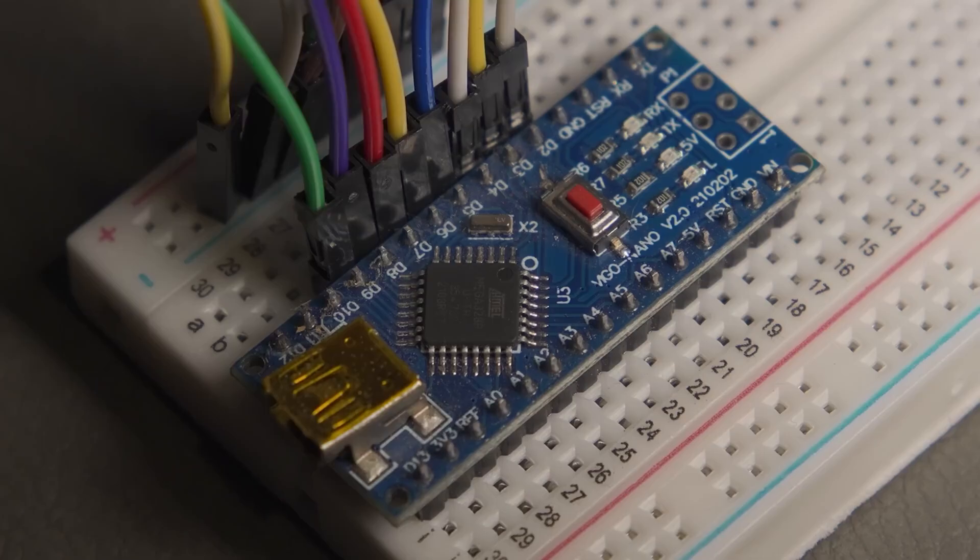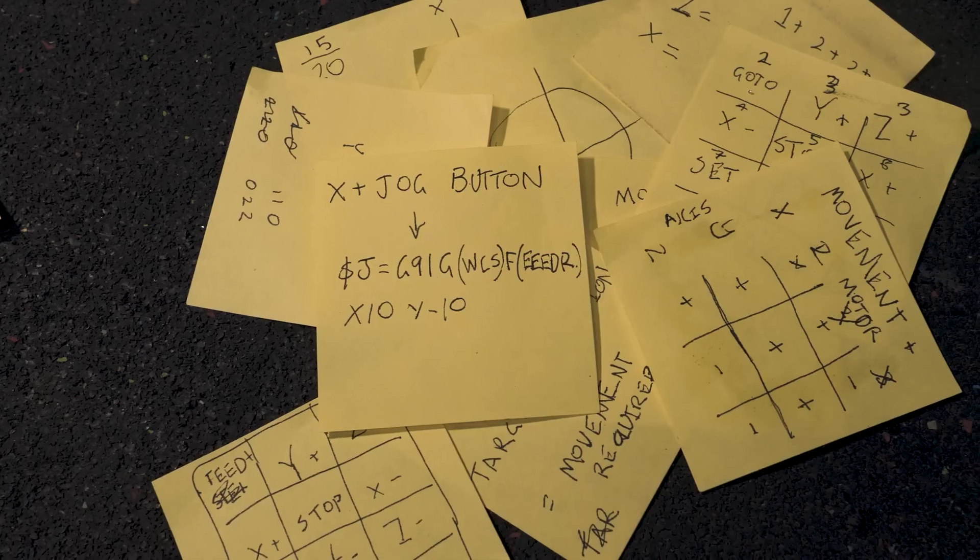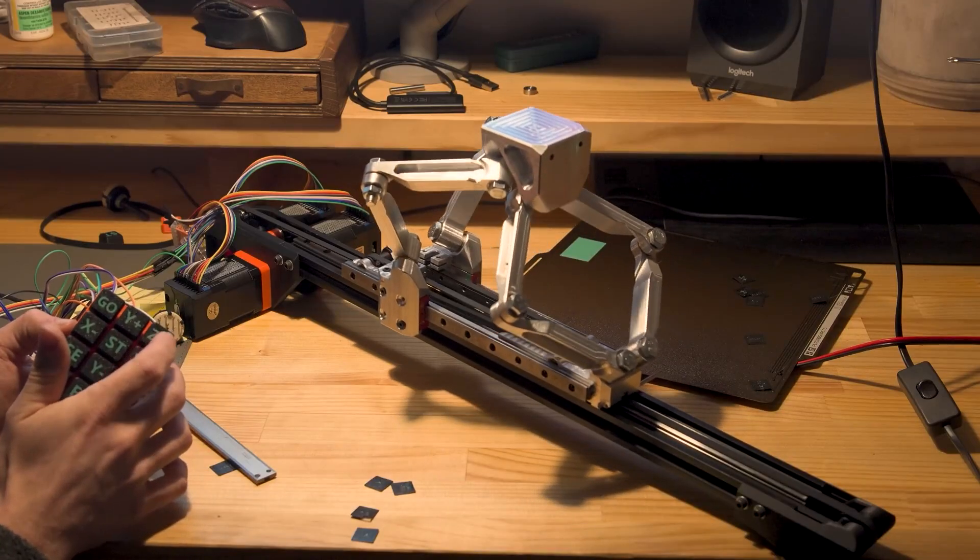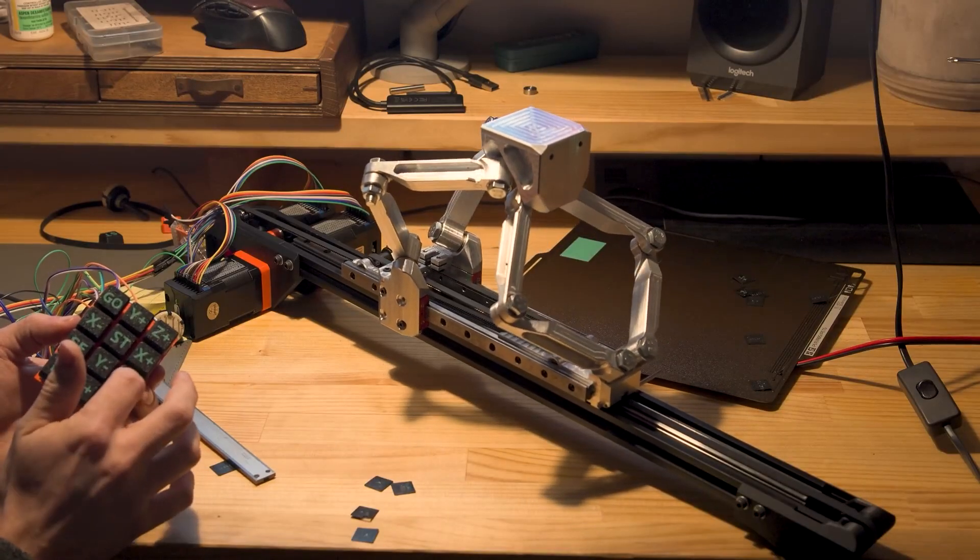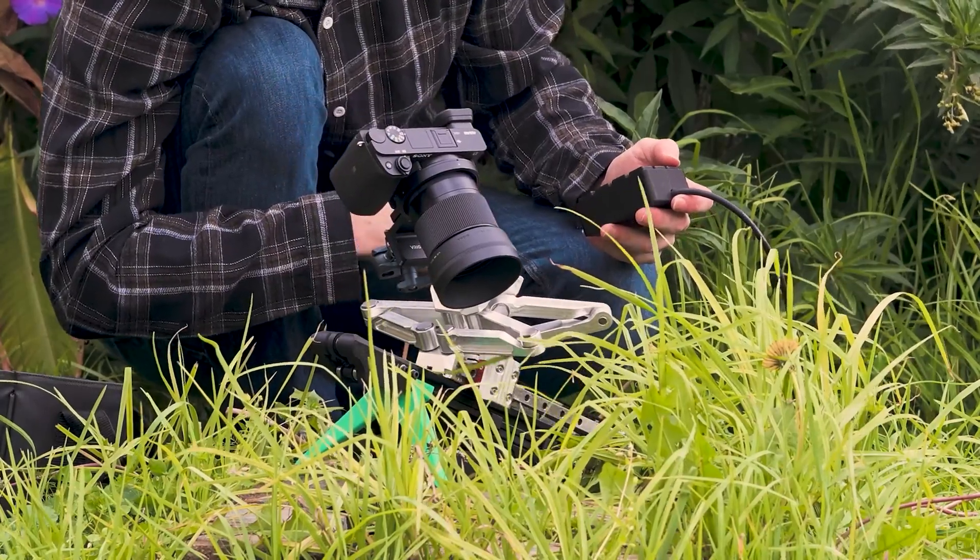For the code, he's using a modified version of Gerbil, which is normally used to control CNC routers and similar machines. This is mostly a technical exercise for him, but at the end he reveals he's going to use it as a very elaborate camera slider. It's pretty cool.